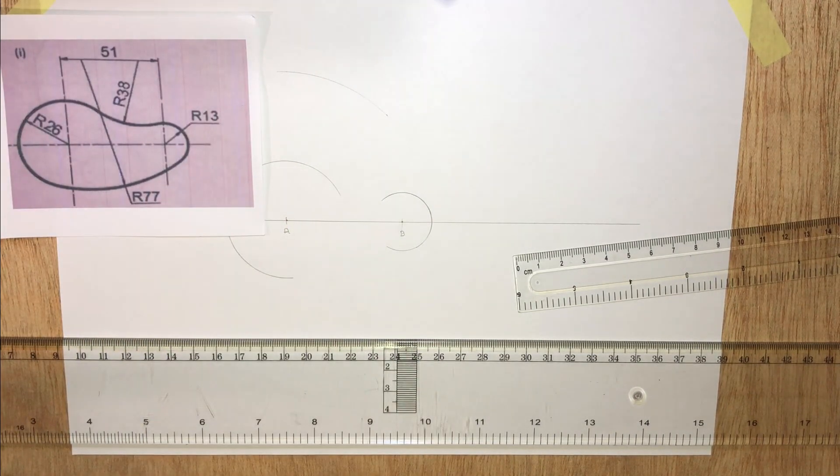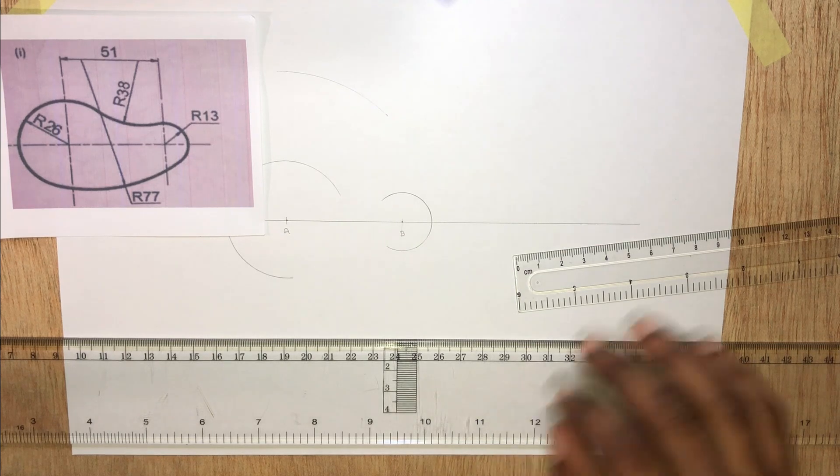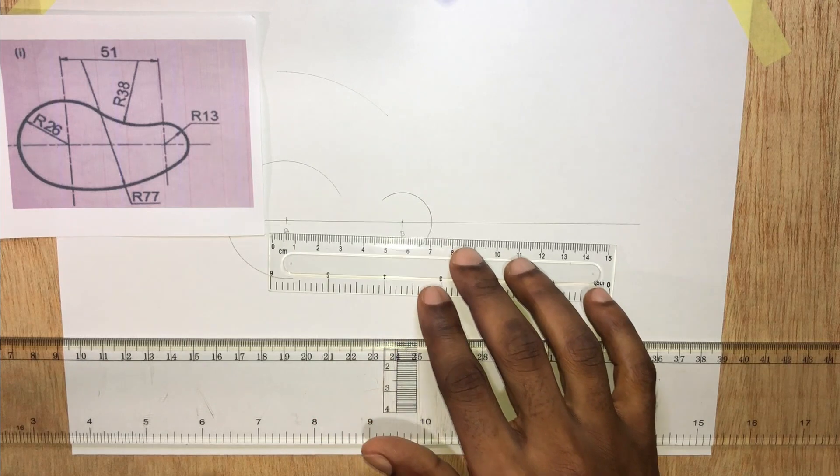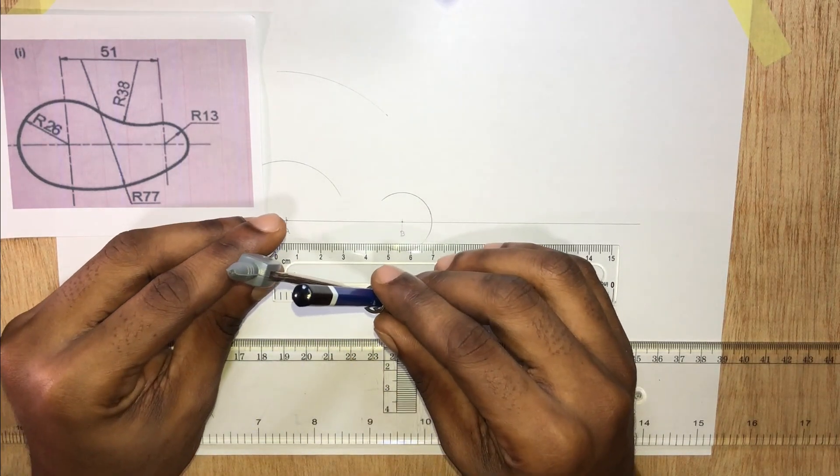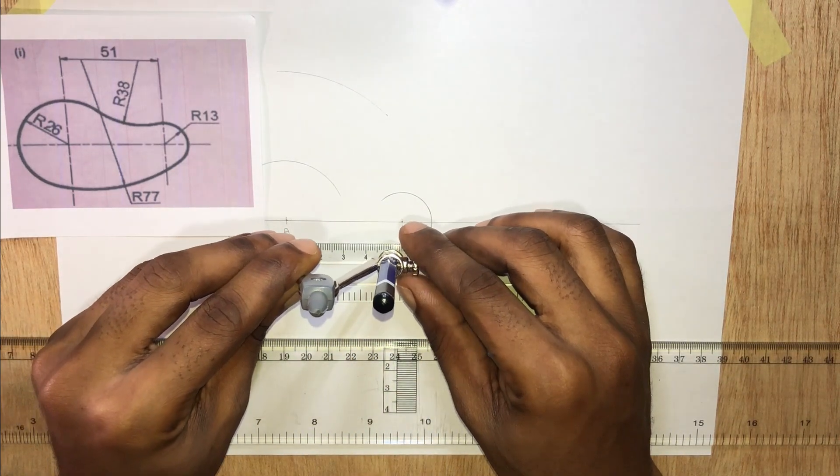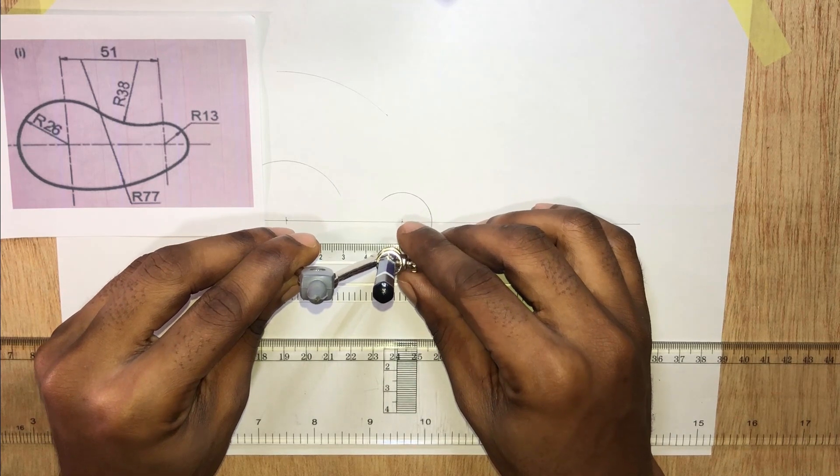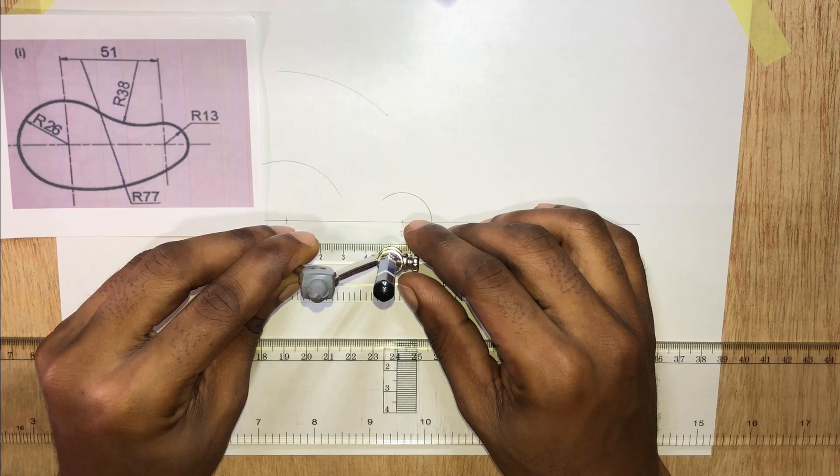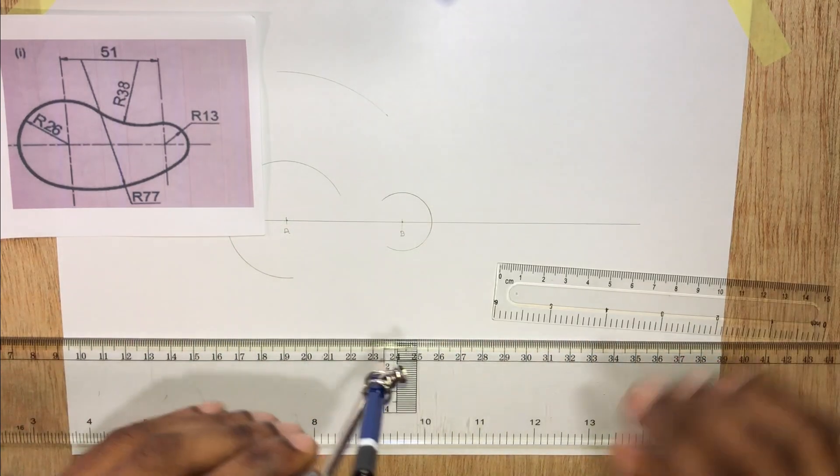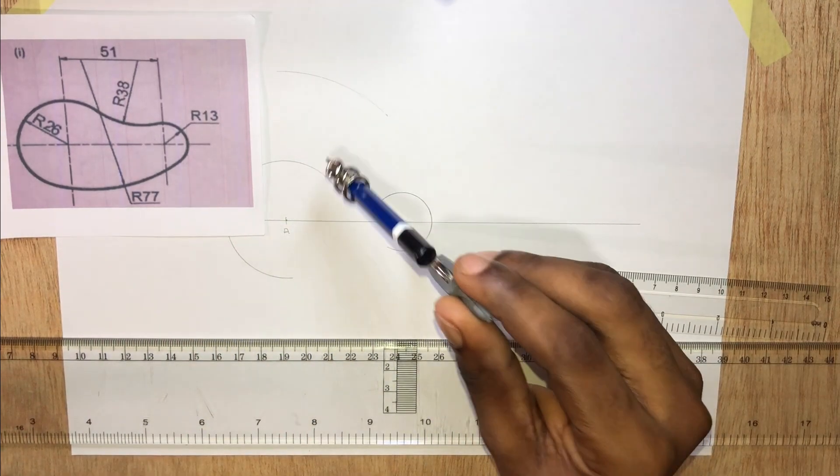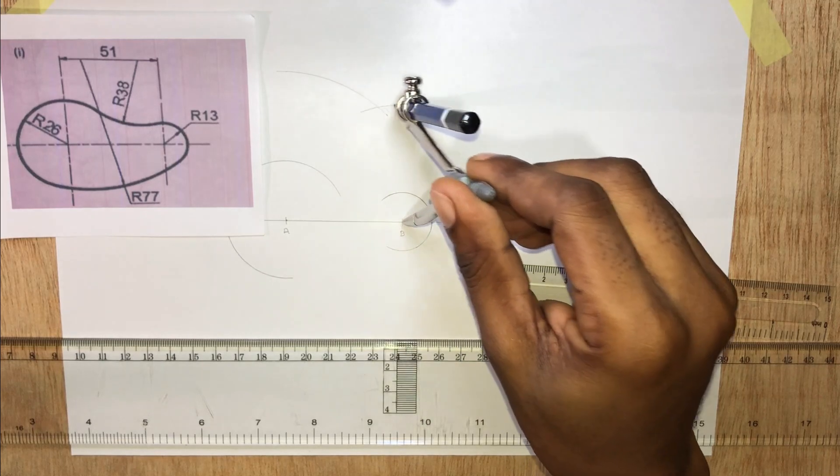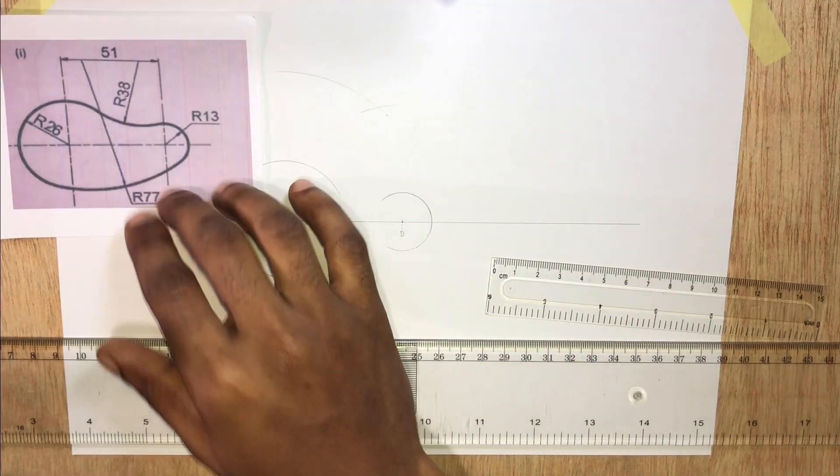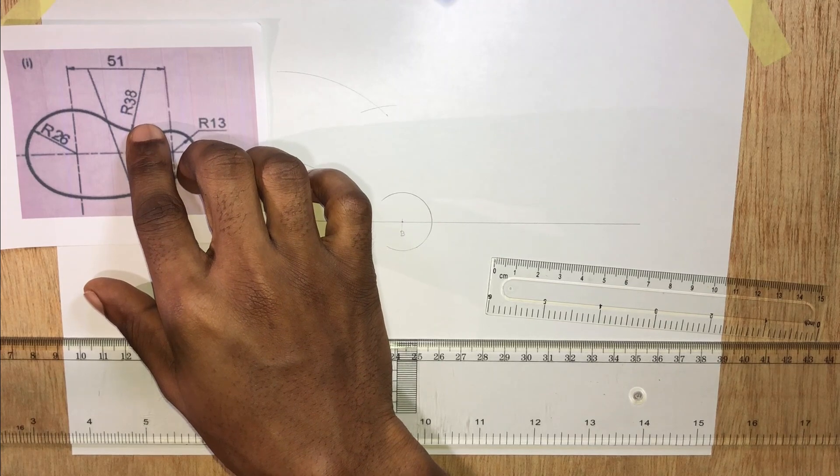38 plus 13 should give us 51 millimeters. So now let's draw that circle. Radius of 38 millimeters.